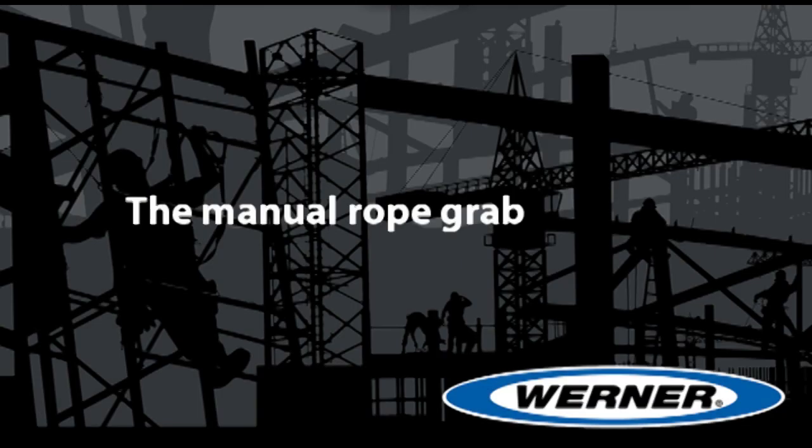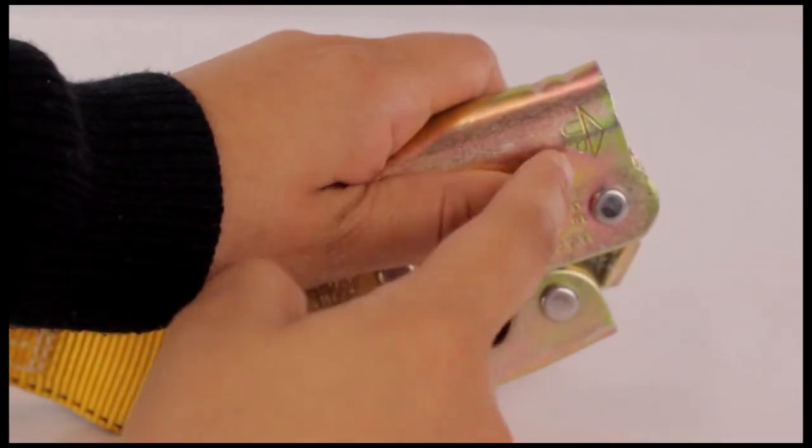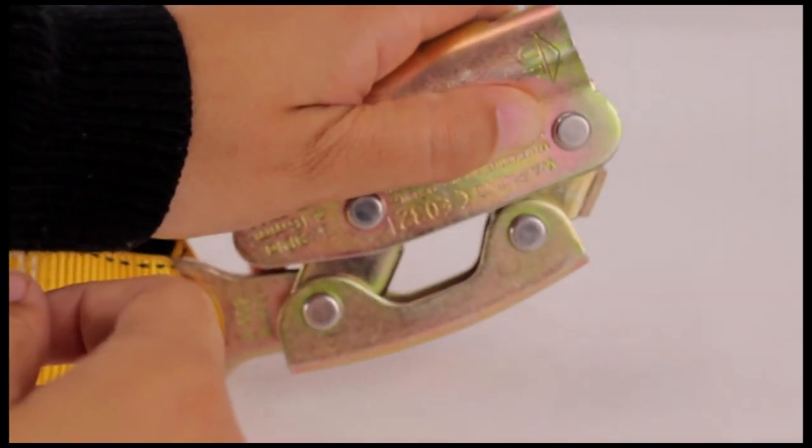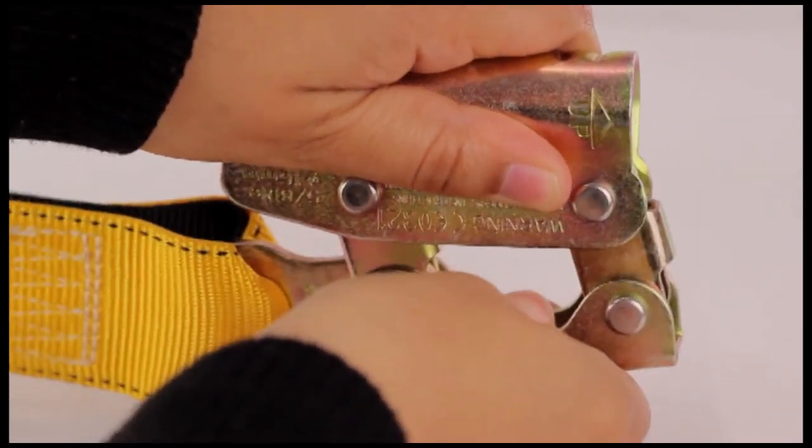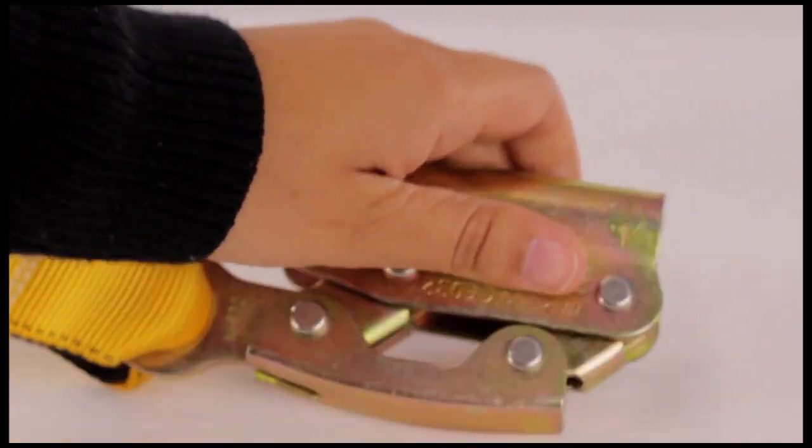The Manual Rope Grab. Holding the rope channel in one hand with the arrow pointing up, move the lock handle connected to the lanyard upward. Upon release, the handle must snap back into its original position.